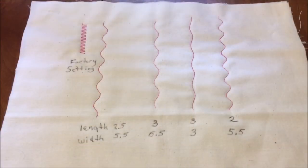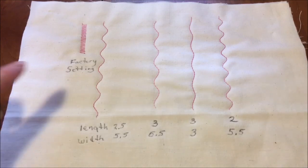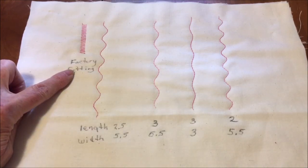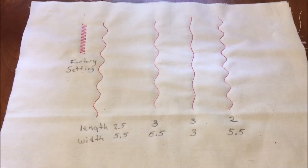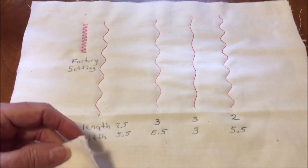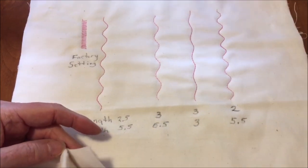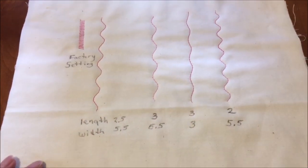Next you should test the stitch. The factory setting for this stitch is a short stitch pattern. Make a sample swatch of fabric. Place a piece of batting between two pieces of fabric. I was using muslin.